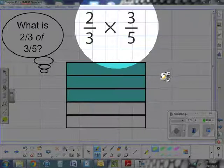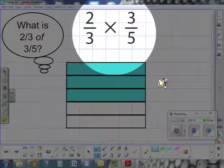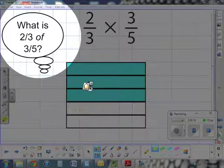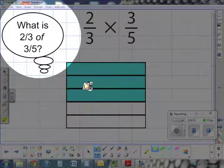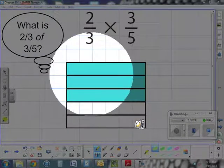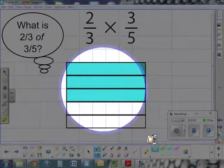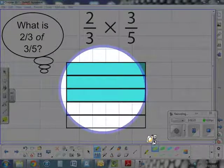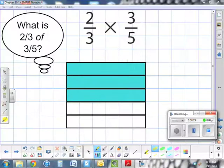For our first problem we have two-thirds times three-fifths. When you have a multiplication problem, you have to ask yourself: What is two-thirds of three-fifths? Here I have my fraction model of three-fifths, because we want to know what is two-thirds of three-fifths.